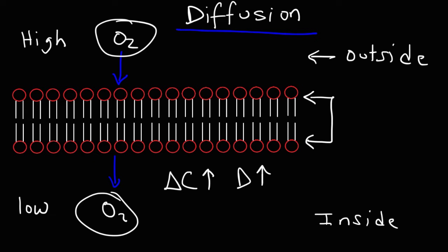Another factor that affects diffusion is temperature. At higher temperatures, gas particles can diffuse into or out of the cell membrane, and so as we increase the temperature, the rate of diffusion of oxygen into the cell will increase as well. At higher temperatures, gas molecules have more kinetic energy, which means they're moving faster. And at higher speeds, they can diffuse across the cell membrane at a higher rate. That's why temperature and diffusion rate are directly related.